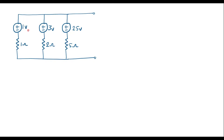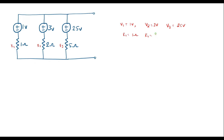Here we can see that V1 is equal to 1 volt, V2 is equal to 3 volts, and V3 is equal to 25 volts. Let this be resistor R1, this as resistor R2, and this as resistor R3. That is, R1 is equal to 1 ohm, R2 is equal to 2 ohm, and R3 is equal to 5 ohm.